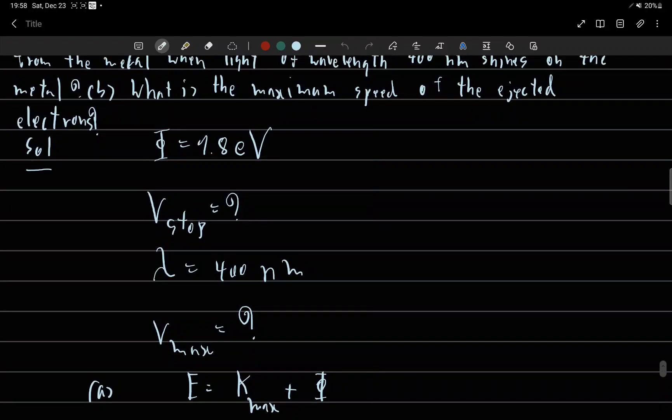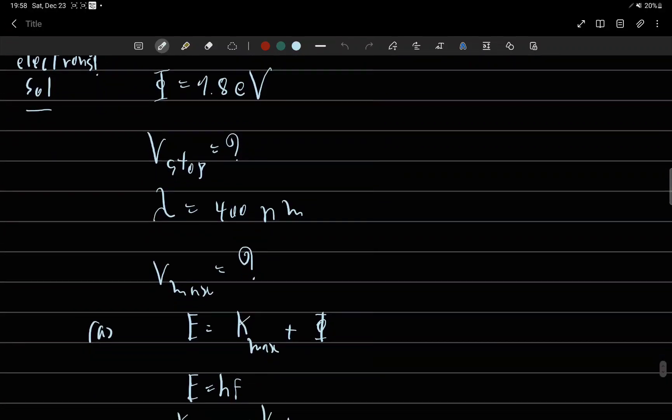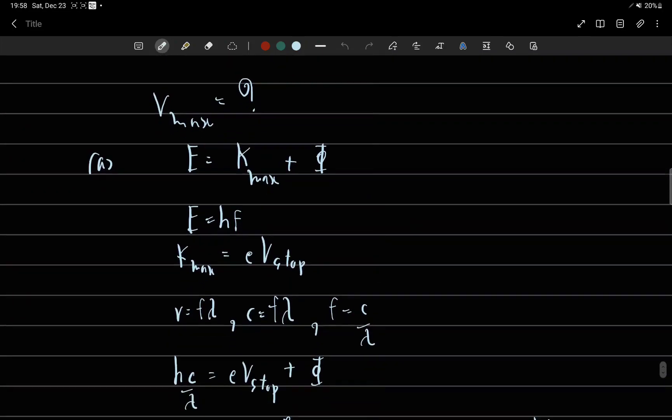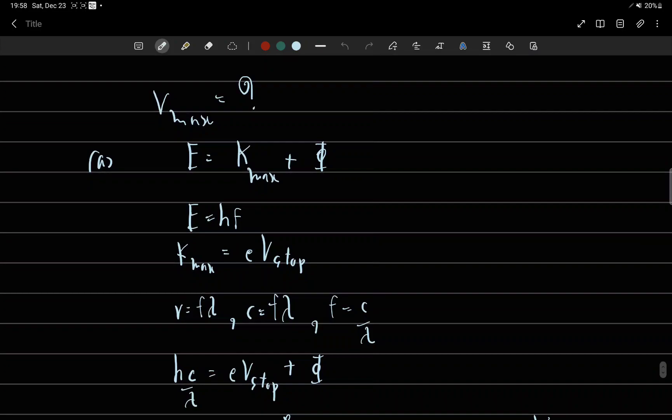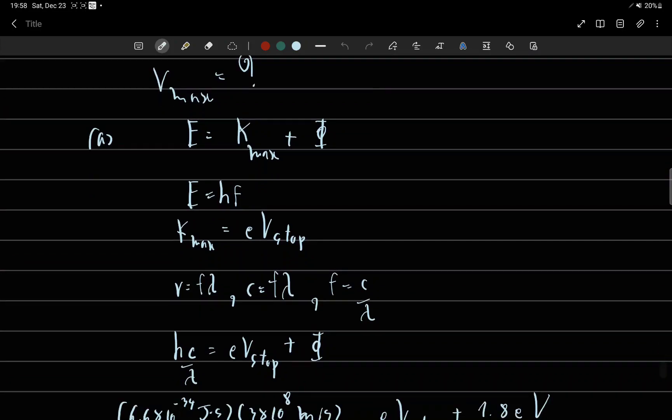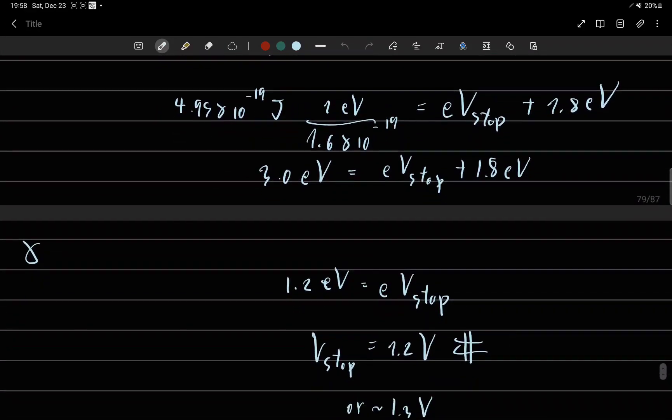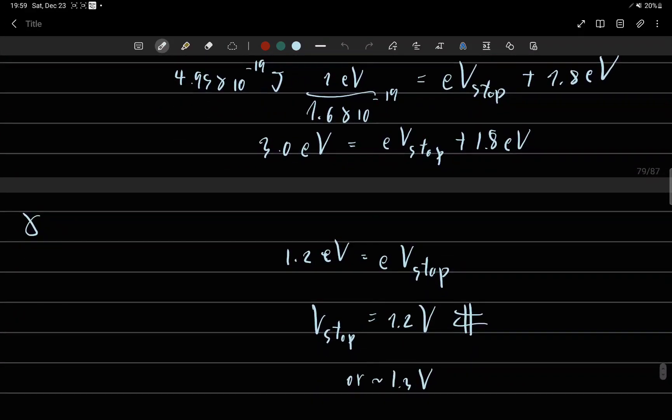E equals K-max plus work function, and E equals hf, and K-max equals eV-stop, and E can turn to hc over lambda. So V-stop equals 1.2 volts.